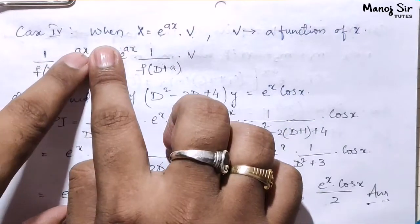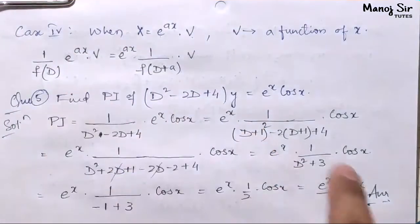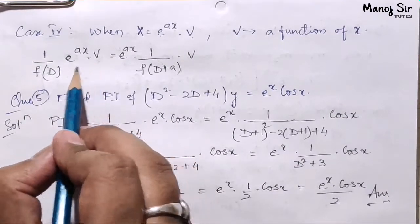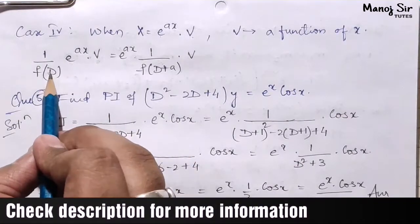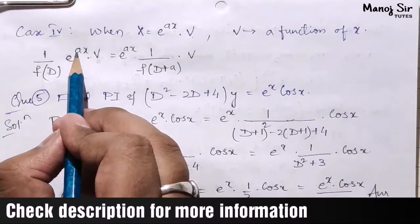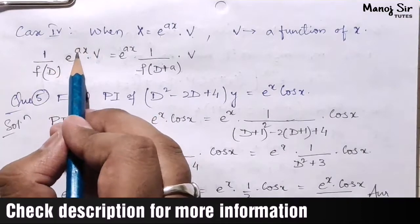But here it is in combination form. In this case, we replace D with D plus a, where a is the coefficient of x in e^(ax). In place of D, we first write D plus a.